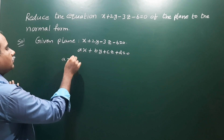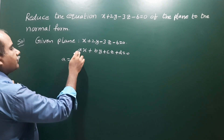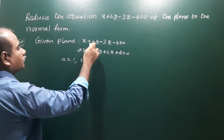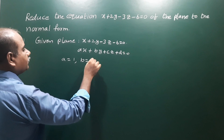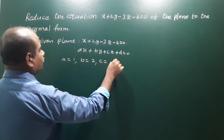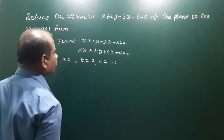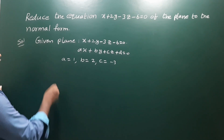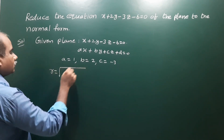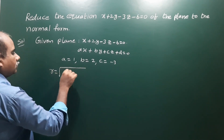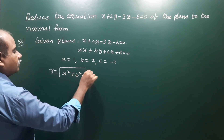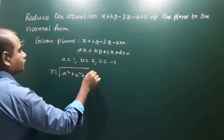Here, a is equal to 1, the coefficient of x. b is equal to 2, the coefficient of y. c is equal to minus 3, the coefficient of z. Next, find the value of r, where r means the square root of a squared plus b squared plus c squared.